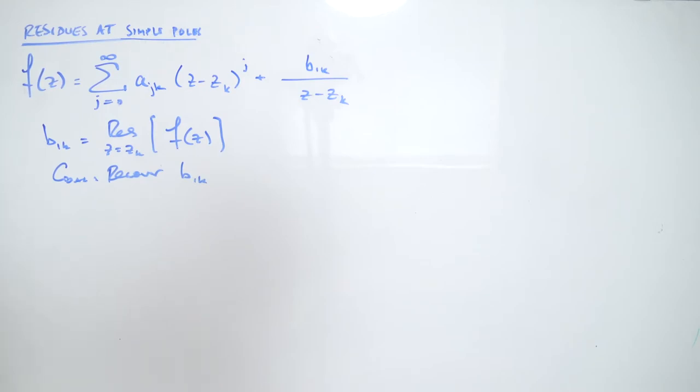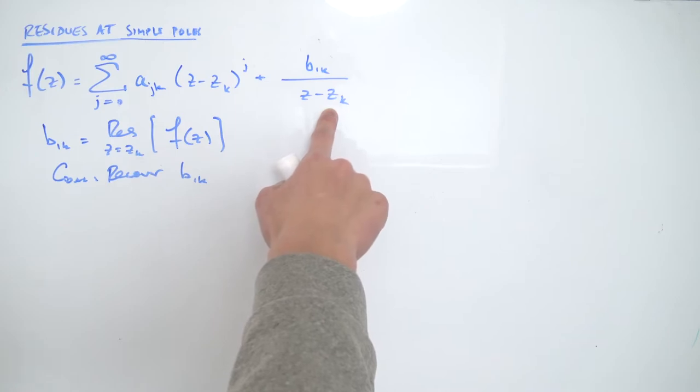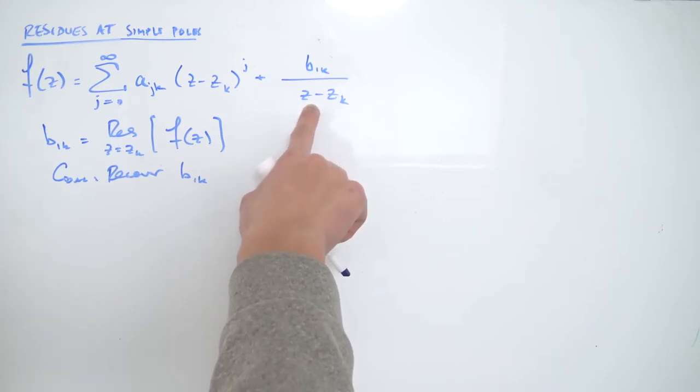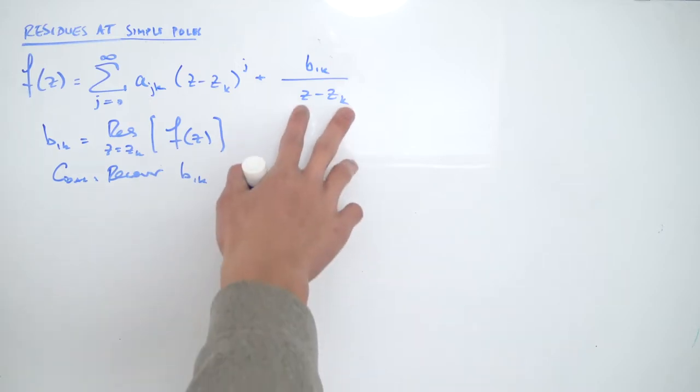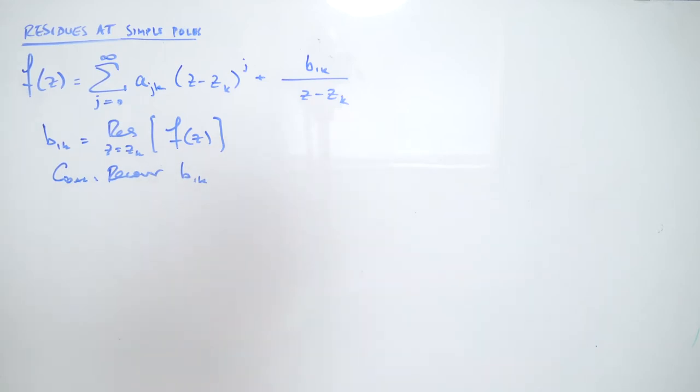But the problem comes on the principal part, because if we have Z being equal to Zk, then we're going to have a zero on the denominator, which is a bit of an issue. So if we directly plug Z equals Zk into here, we're not going to get any meaningful result. The trouble is this denominator, and we want to get rid of this denominator somehow.